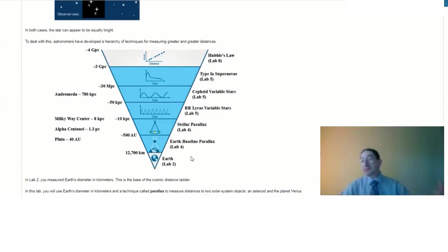We'll then use that Venus measurement to determine the size of the astronomical unit. How big is the Sun-Earth distance? With that in hand, we can go another rung up on the cosmic distance ladder and carry out what is called stellar parallax. This uses the astronomical unit and the same parallax technique to measure distances to nearby stars, and we'll use it to measure the distance to Alpha Centauri, the closest star system to our Sun.